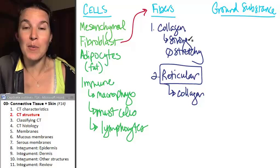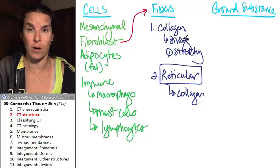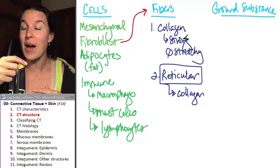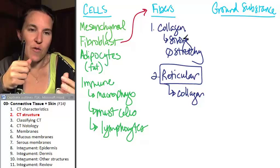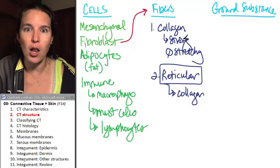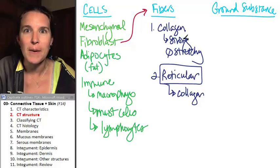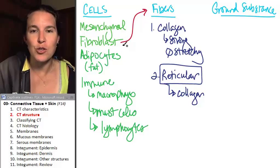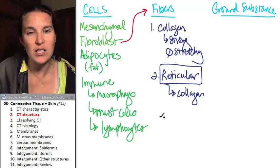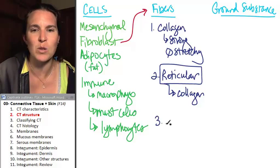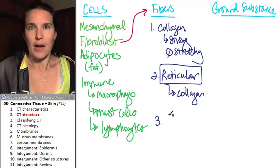So you have collagen fibers which are big, thick, strong ropes of collagen which is nothing more than a protein and then you have reticular fibers which are thin, like kind of bouncy, like a bouncy ball. You can use reticular fibers to make bouncy balls or lymph nodes. You choose. But they're also made of collagen but the collagen is just a little bit thinner. That was the word.